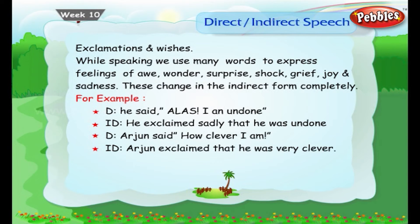Exclamations and wishes: While speaking, we use many words to express feelings of awe, wonder, surprise, shock, grief, joy and sadness. These change in the indirect form completely. For example — Direct: He said, 'Alas, I am undone.' Indirect: He exclaimed sadly that he was undone.